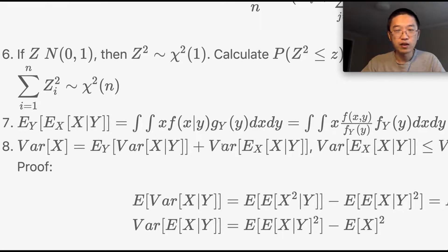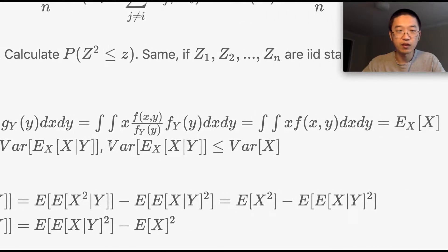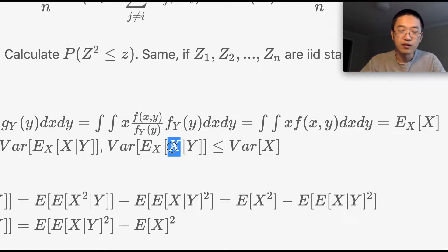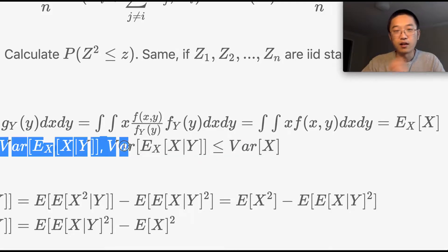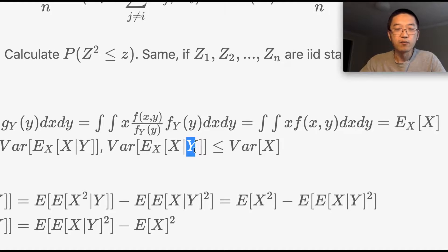Looking at the second term — Var(E[X|Y]) — this is the variance of the expected value of X given Y. If we know Y and X and Y are correlated, this variance is smaller than Var(X). This gives a good intuitive explanation: if you know something about Y ahead of time and they are correlated, you can reduce the variance of your estimate of X using that prior knowledge.